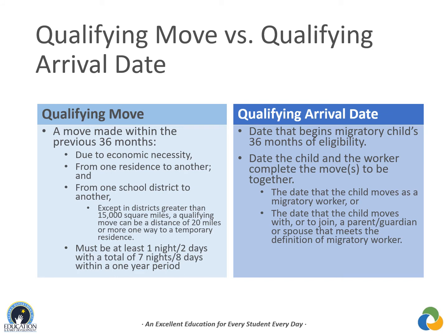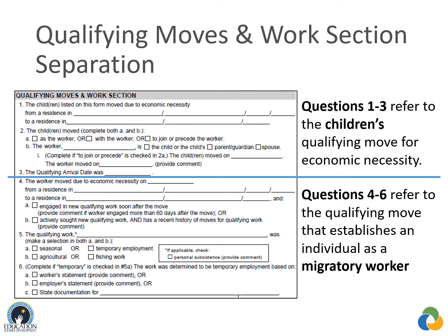There is a distinction between a qualifying move and a qualifying arrival date. A qualifying move is a move within the previous 36 months due to economic necessity from one residence to another, from one school district to another (with an exception for districts greater than 15,000 square miles). A qualifying arrival date is the date that begins a migratory child's 36 months of eligibility — the date both the qualifying worker and migratory child complete their qualifying moves to be together. A child or worker may have many qualifying moves, but not all lead to a qualifying arrival date.